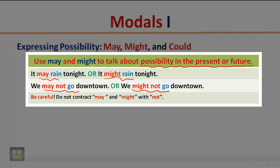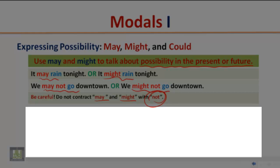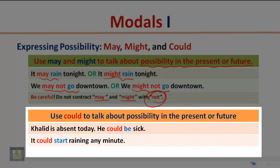Be careful: do not contract may and might with not. Use could to talk about possibility in the present or future. Examples: Khalid is absent today — he could be sick. It could start raining any minute. The modal auxiliary could is used to express possibility in the present or future.